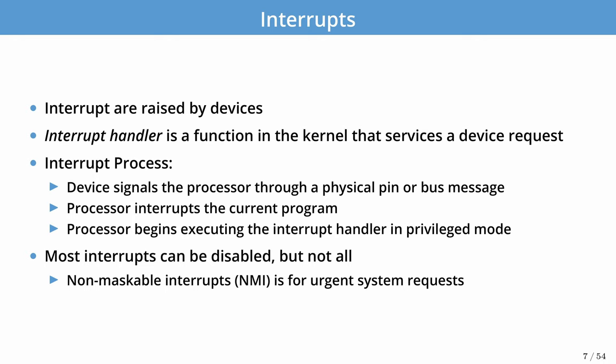Interrupts are from external sources, usually devices attached to your processor. The interrupt handler is the function inside the kernel that services a particular device request. Typically a device signals the processor with one or more physical pins or messages on various buses to tell the processor that an interrupt needs to be raised. The processor then stops the current program, switches into privilege mode, and gives control to the interrupt handler. Most interrupts can be disabled — this is used during the implementation of spin locks as we saw in the previous lecture — but not all. There are non-maskable interrupt sources for urgent system requests, including power issues and thermal issues that cannot be masked.